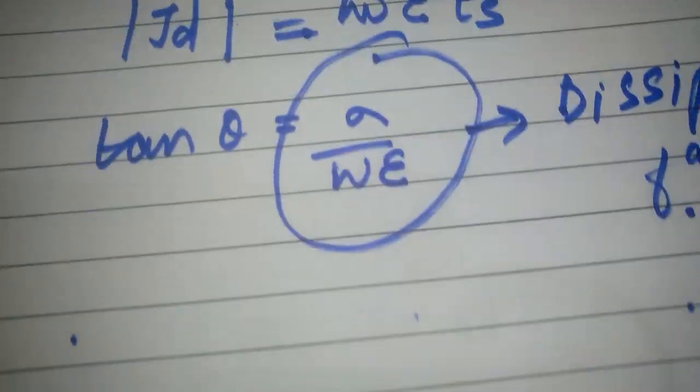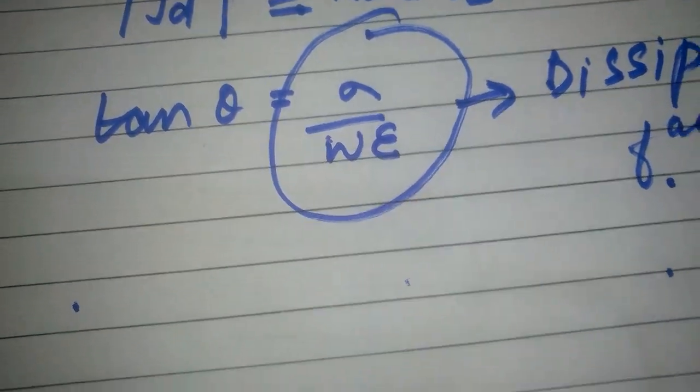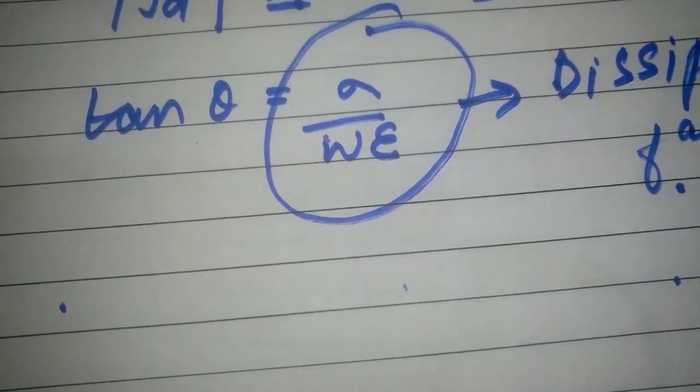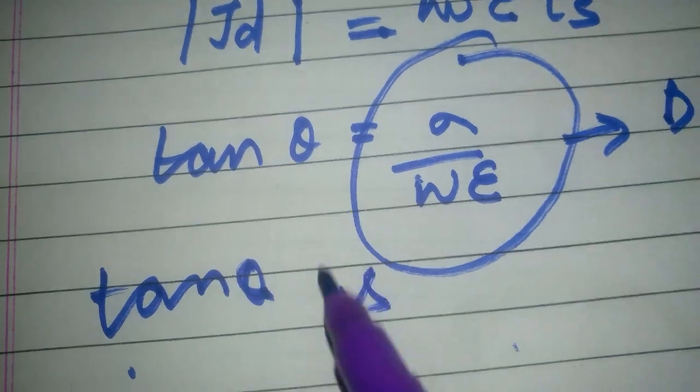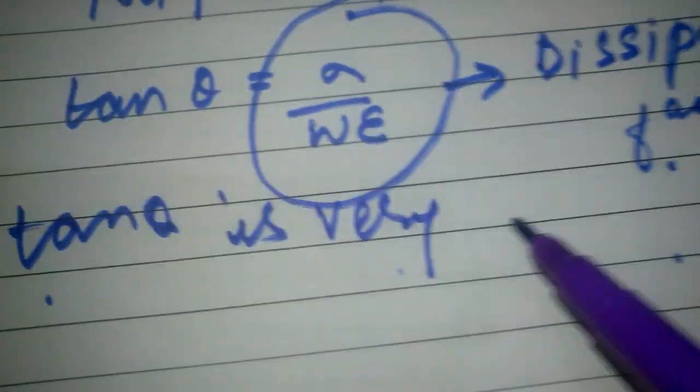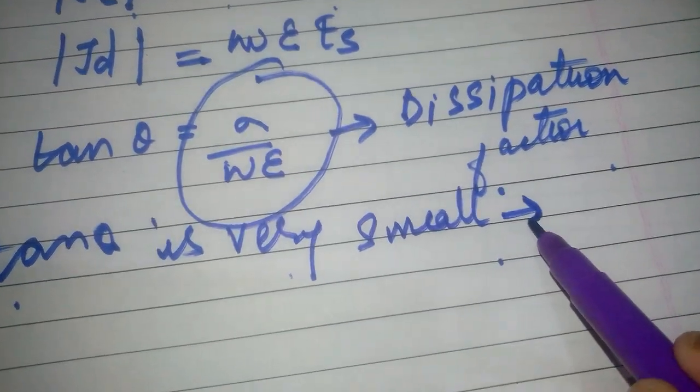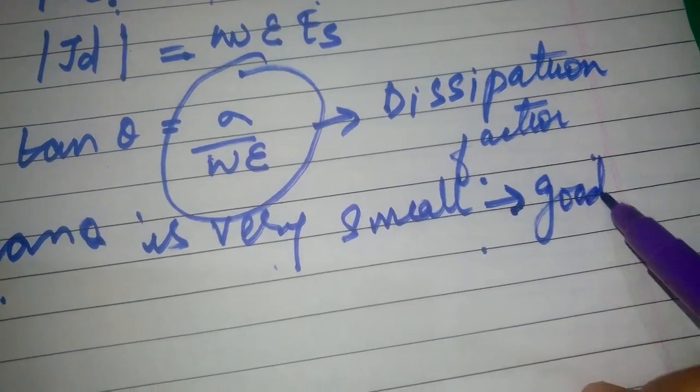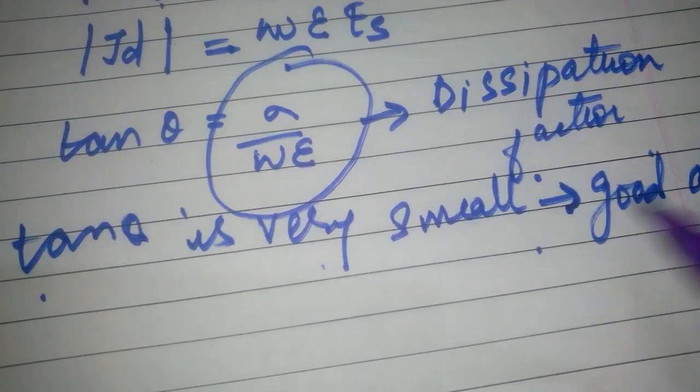The ratio defines whether the material is a good conductor or a dielectric. If tan theta is very small, we can say the material is a good dielectric. If tan theta is very large, we can say that material is a good conductor.